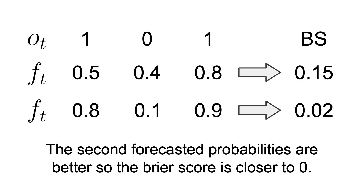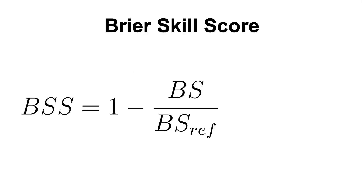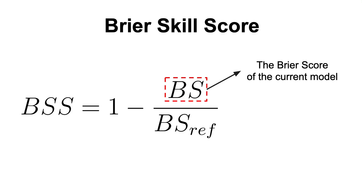So that's basically the Brier score and what it computes — it gives us a sense of how well calibrated the predicted probabilities are. Pretty simple, right? Also, there is another score that you may encounter when measuring the calibration of a model: the Brier Skill Score, which tells us how good the probabilities of the current model are in comparison with a reference model. This one is computed as 1 minus the Brier score of the current model, divided by the Brier score of the reference model.